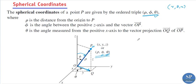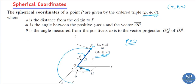Now, if ρ equals a constant, and the other variables φ and θ can take any value — θ can take values from 0 to 2π and φ from 0 to π — then if we choose ρ equal to a constant, we will get a sphere.